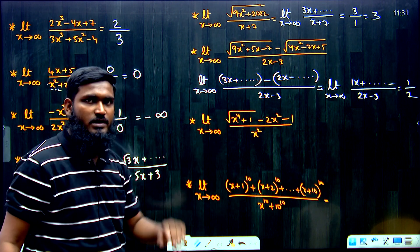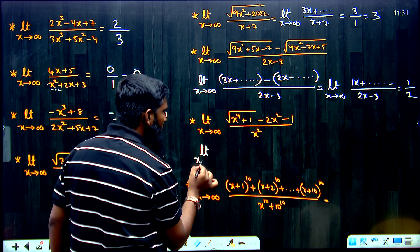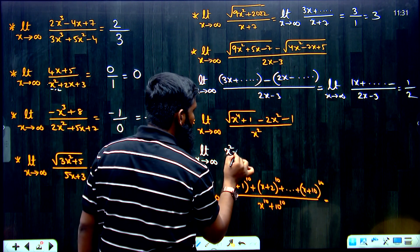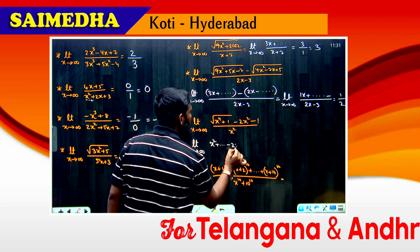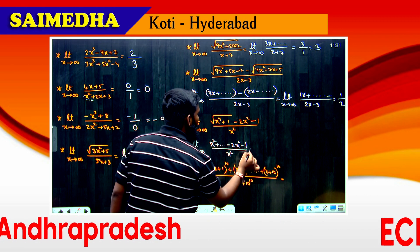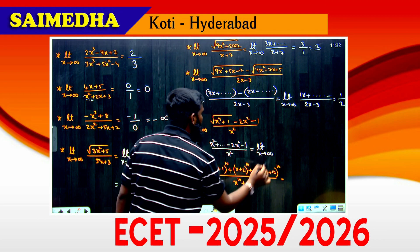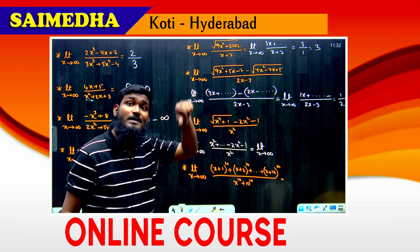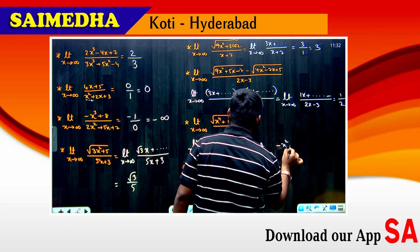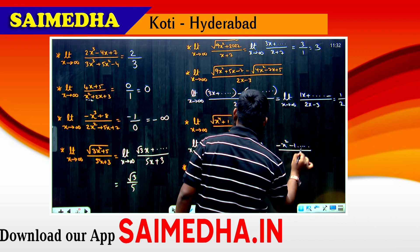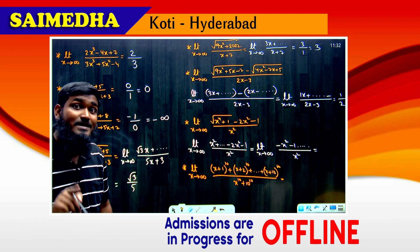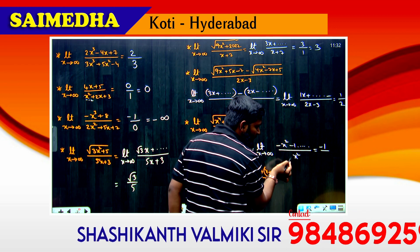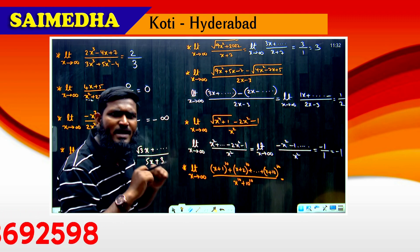Next question: limit x tends to infinity of [√(x⁴ + ...) - 2x² - 1] divided by x². Applying the trick: √(x⁴) = x². Checking like terms: x² - 2x² = -x². The numerator's coefficient of x² is -1 and denominator's coefficient is 1. The answer is -1/1 = -1.